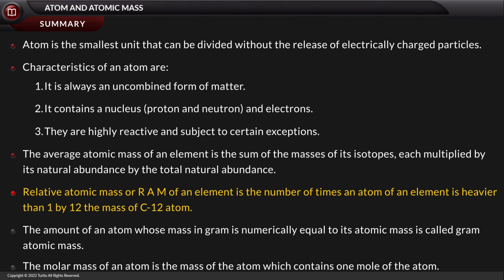The relative atomic mass (RAM) of an element is the number of times an atom of an element is heavier than 1/12 the mass of a C-12 atom. After that comes gram atomic mass: the amount of an atom whose mass in grams is numerically equal to its atomic mass. Lastly, the molar mass of an atom is the mass of the atom which contains one mole of the atom.